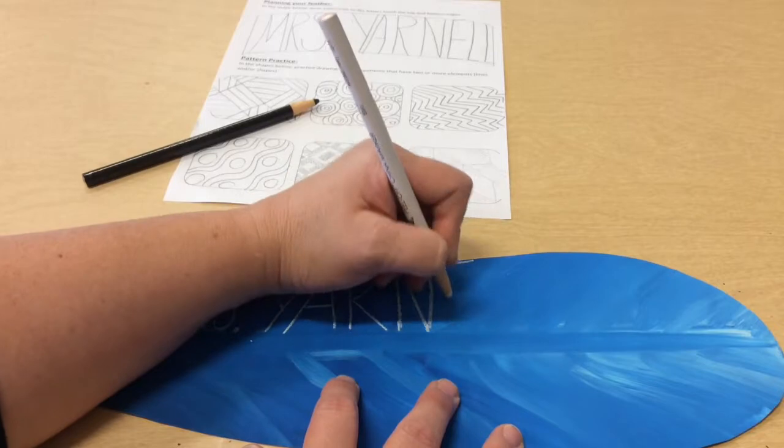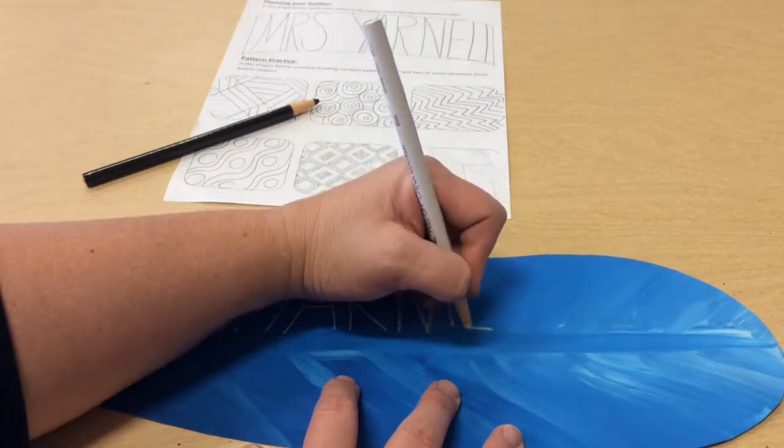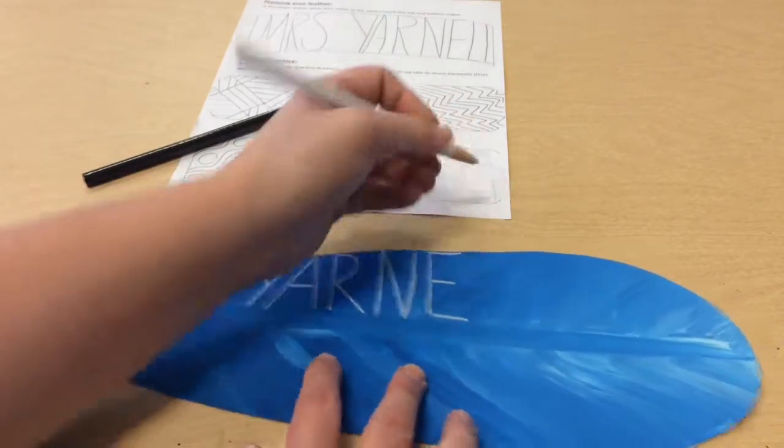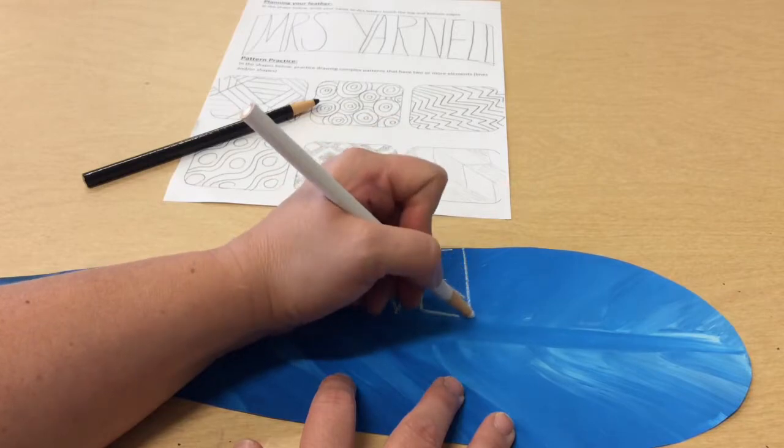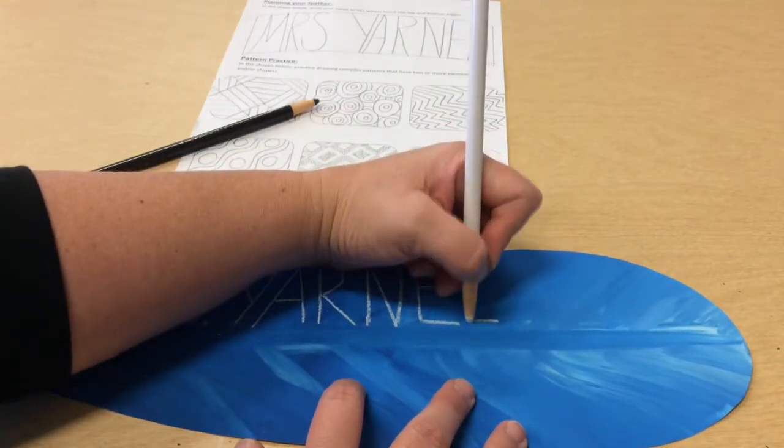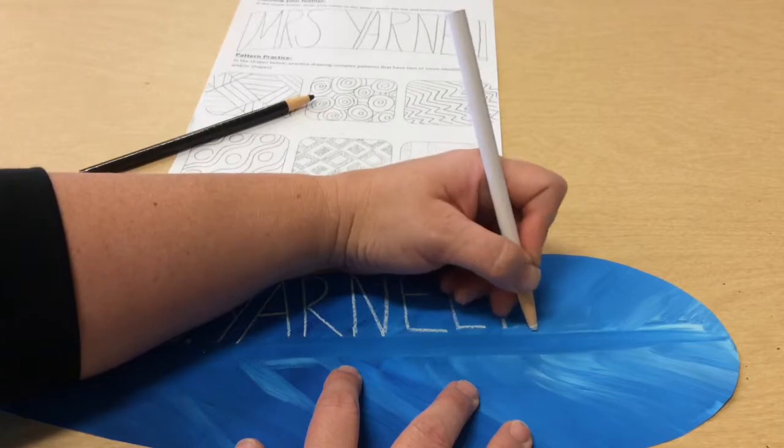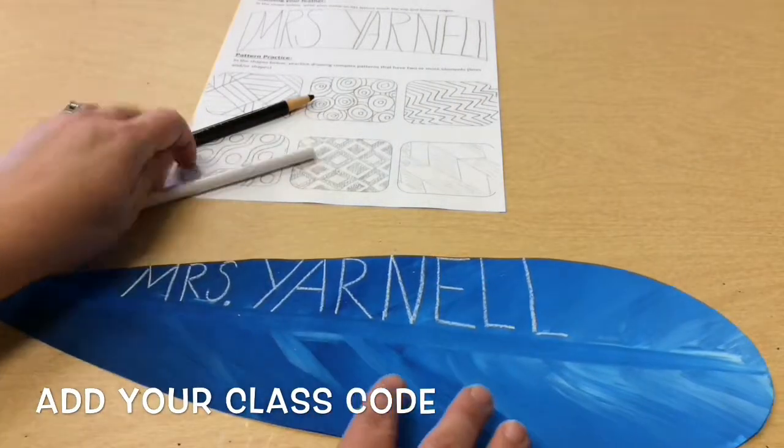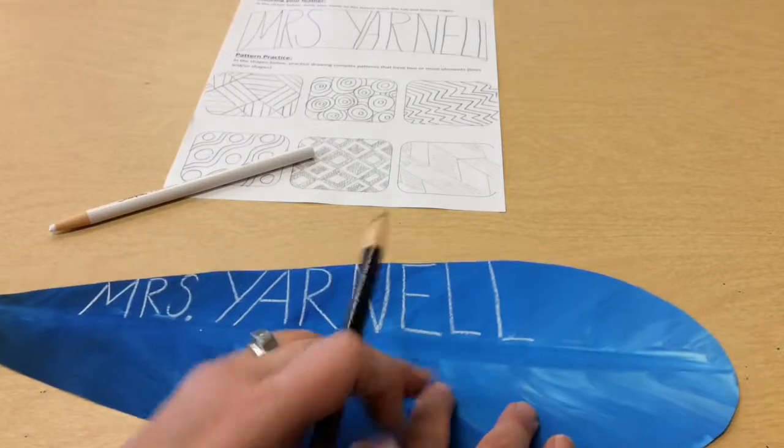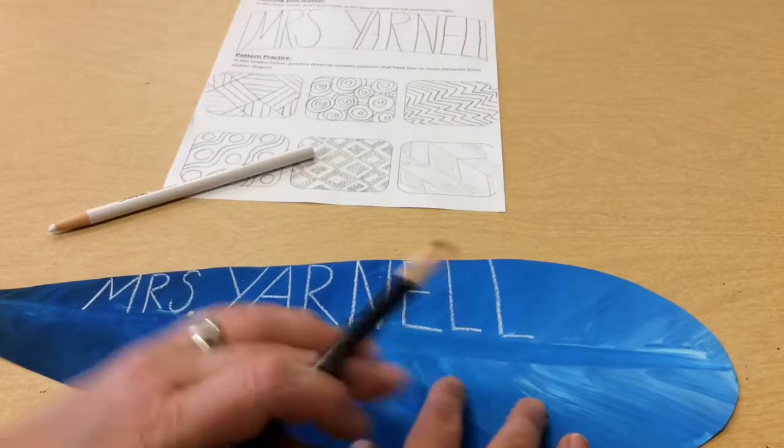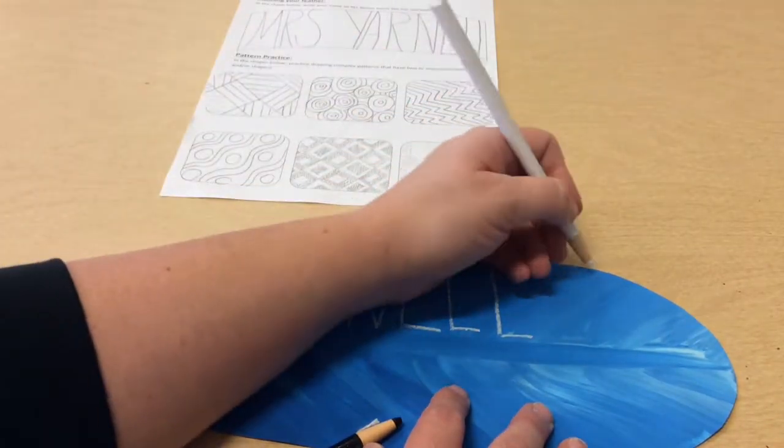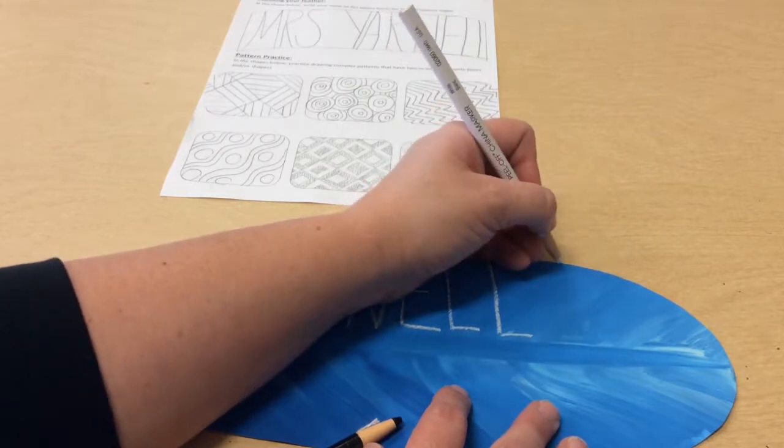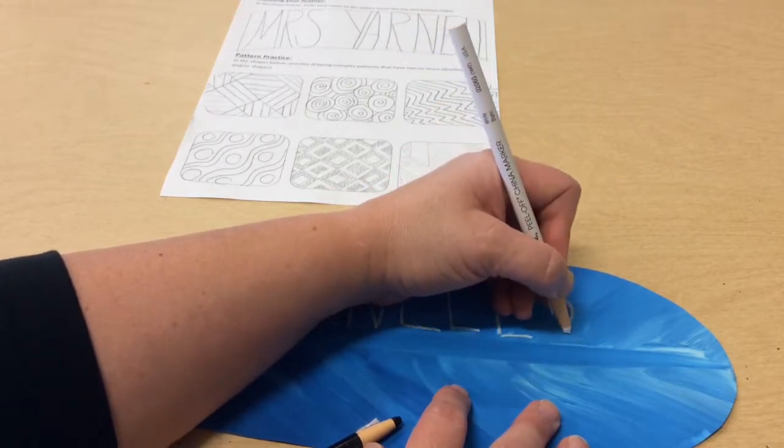My E, I'm going to draw a line at the top and at the bottom. And I'm going to do the same thing for the L so that you see the whole letter. Now I have some room to write my class code. So I can write that wherever I would like.